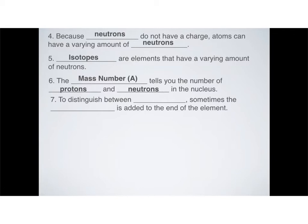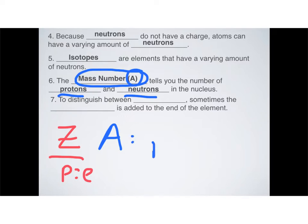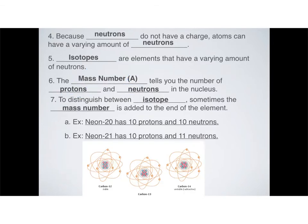So how are we going to keep track of how many neutrons there are and tell the difference between different isotopes? We have to introduce a new type of number called the mass number. Just like atomic number is abbreviated Z, mass number is abbreviated as a capital letter A, and that tells you the number of protons and neutrons in the nucleus. Don't get this mixed up — atomic number tells you the number of protons, and incidentally also the number of electrons. Mass number gives you protons plus neutrons, both added together, and that's very different.